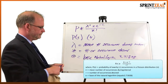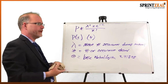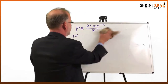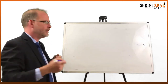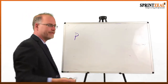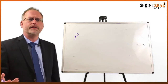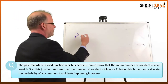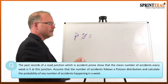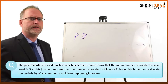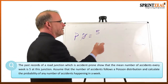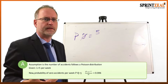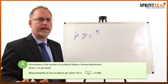Now we just plug and play. Now that we know what all the symbols mean, we start applying them to our particular case. So let's fill out our Poisson calculation. First, let's find the probability of zero accidents happening per week: P(0). Our mean μ is 5, because we know there's an average of 5 accidents at this junction per week.